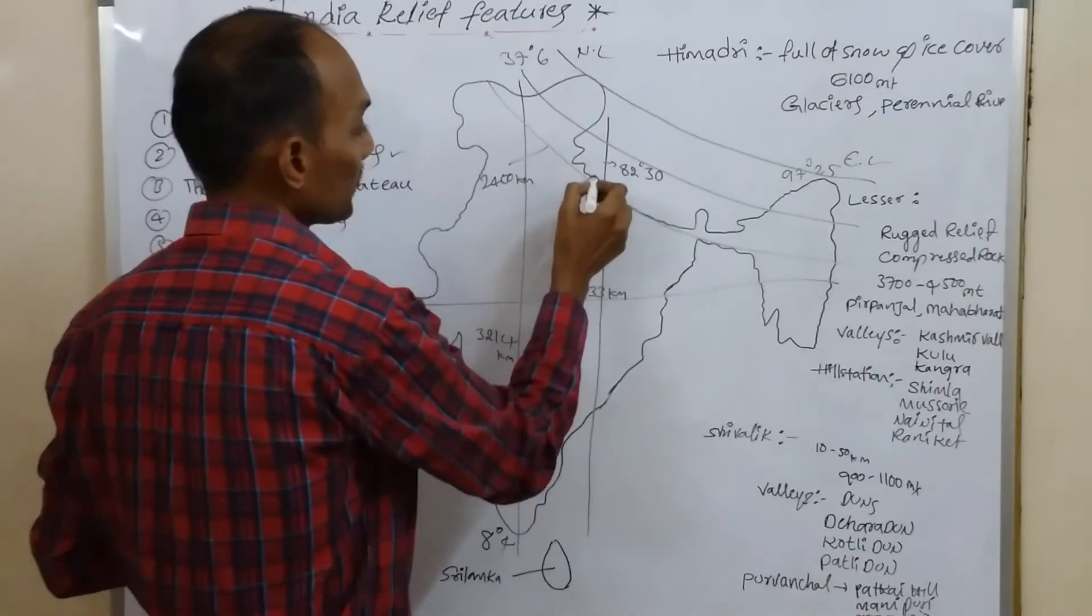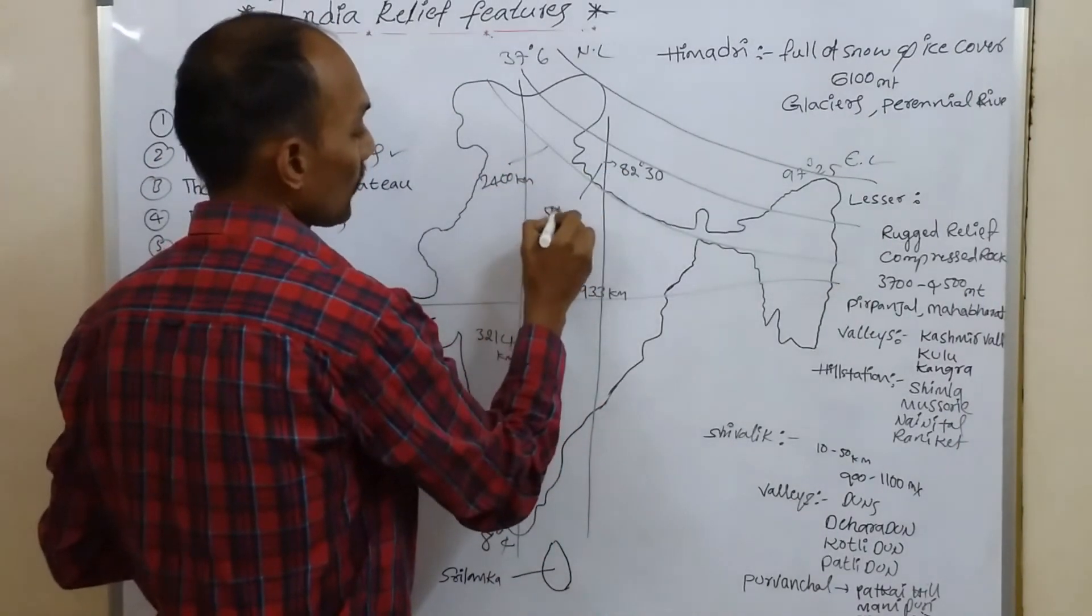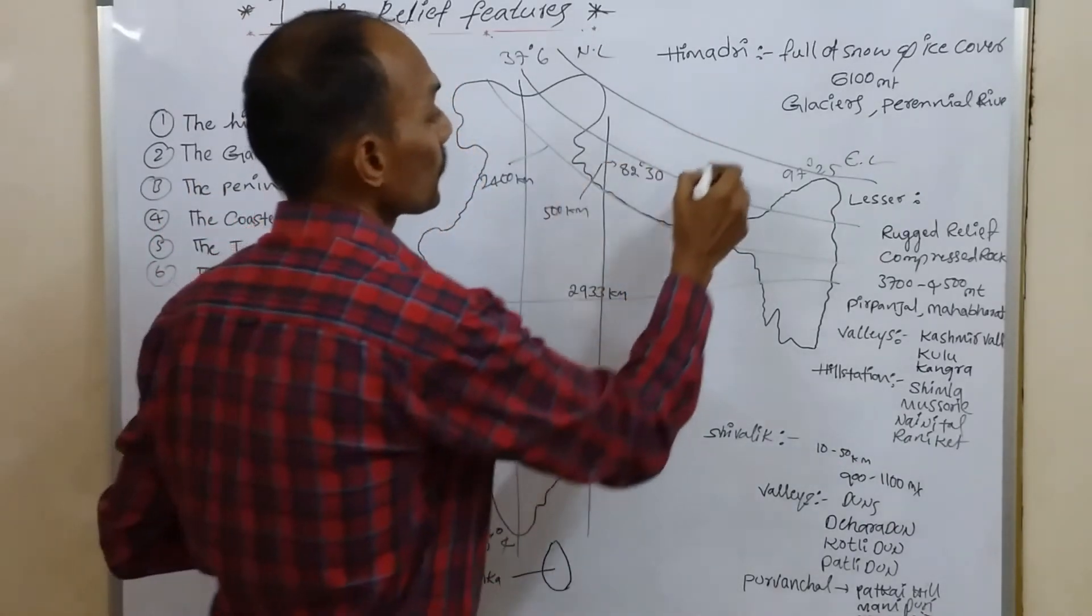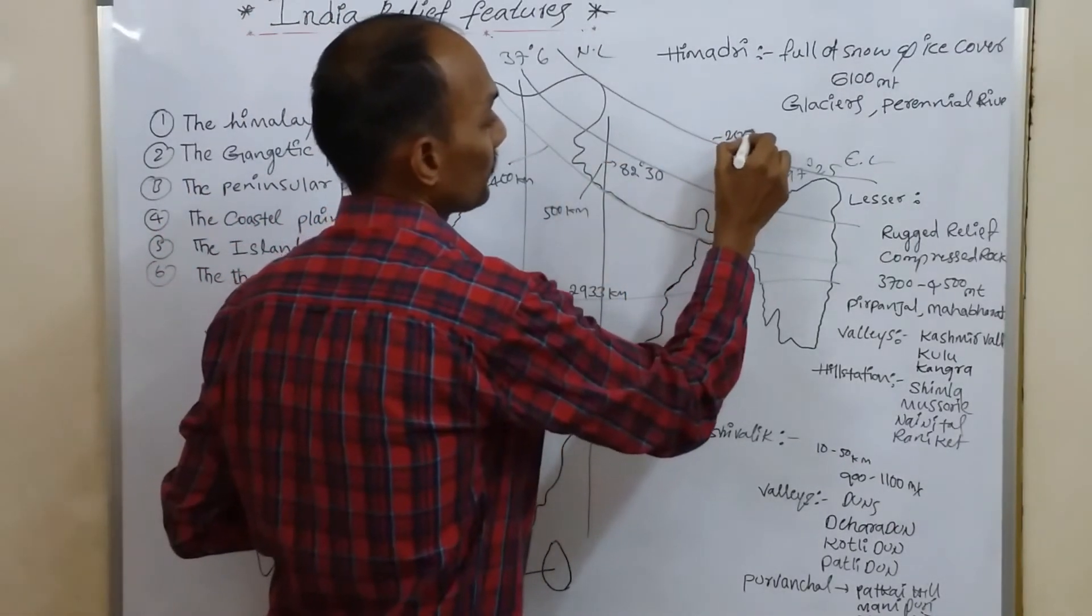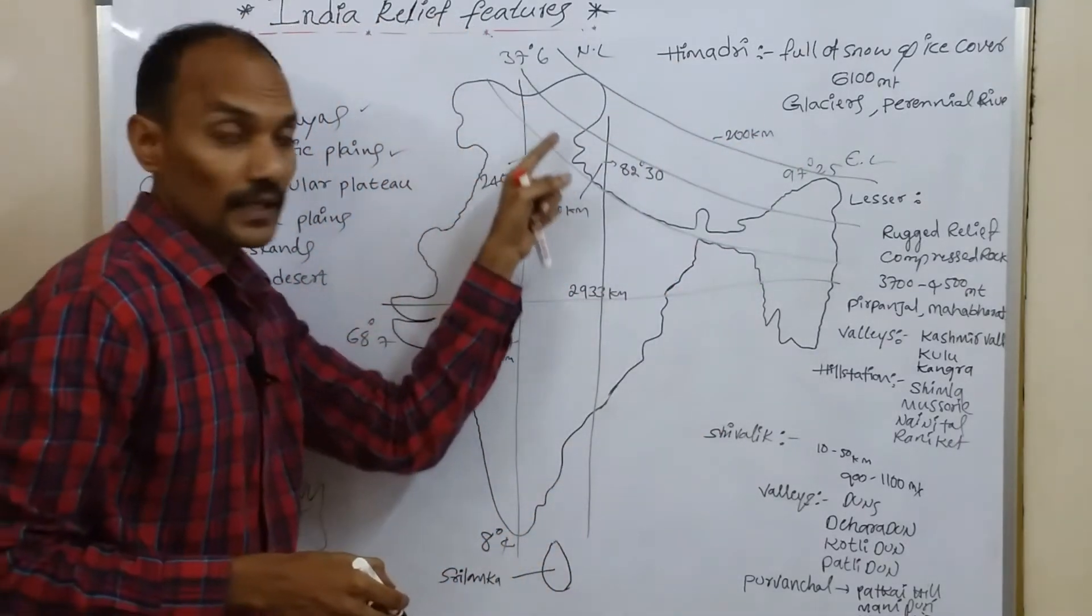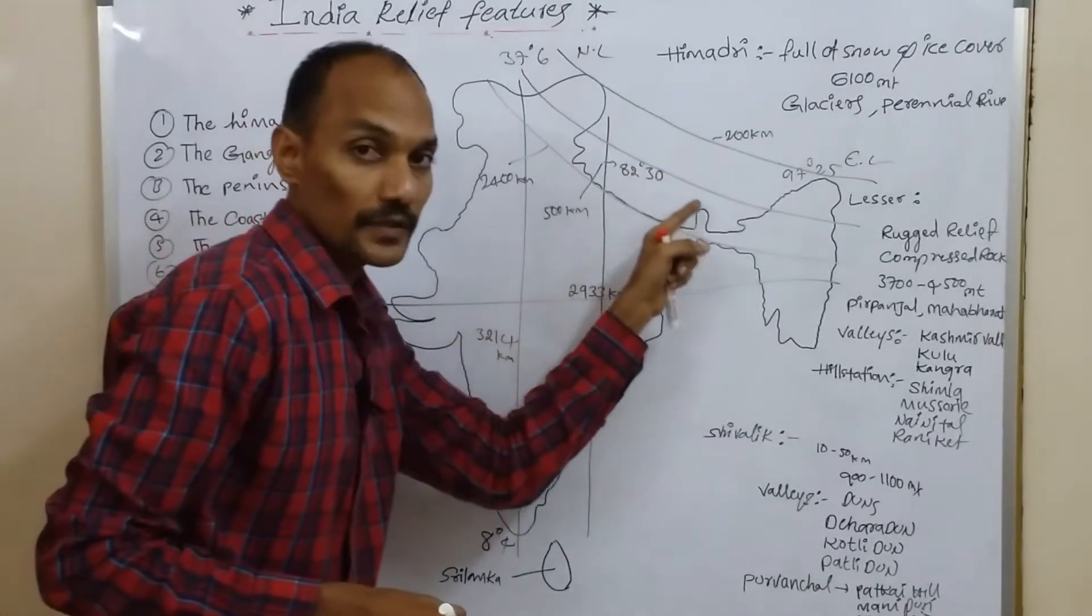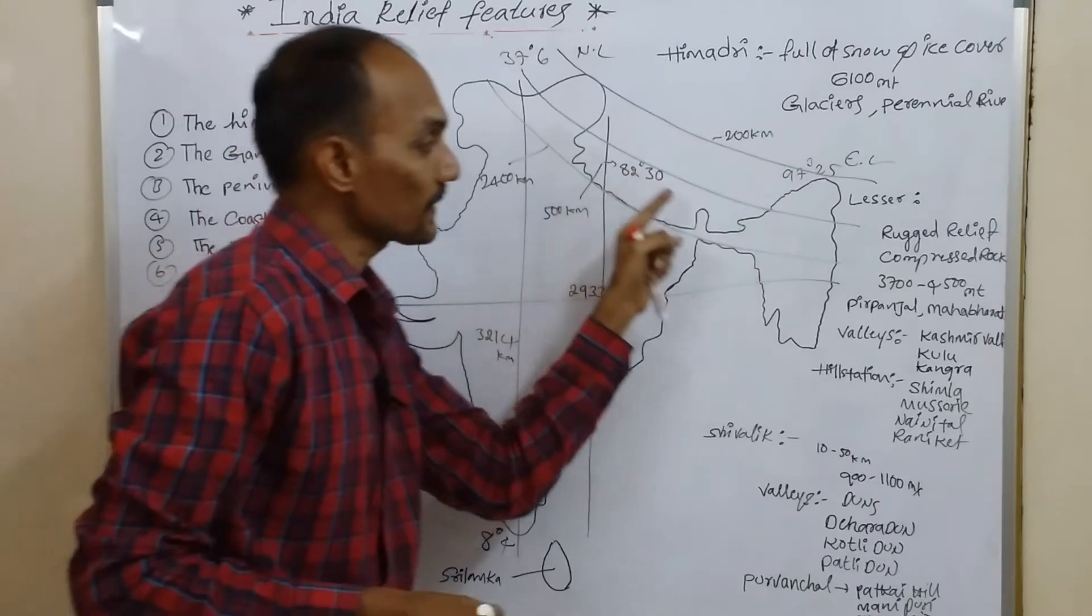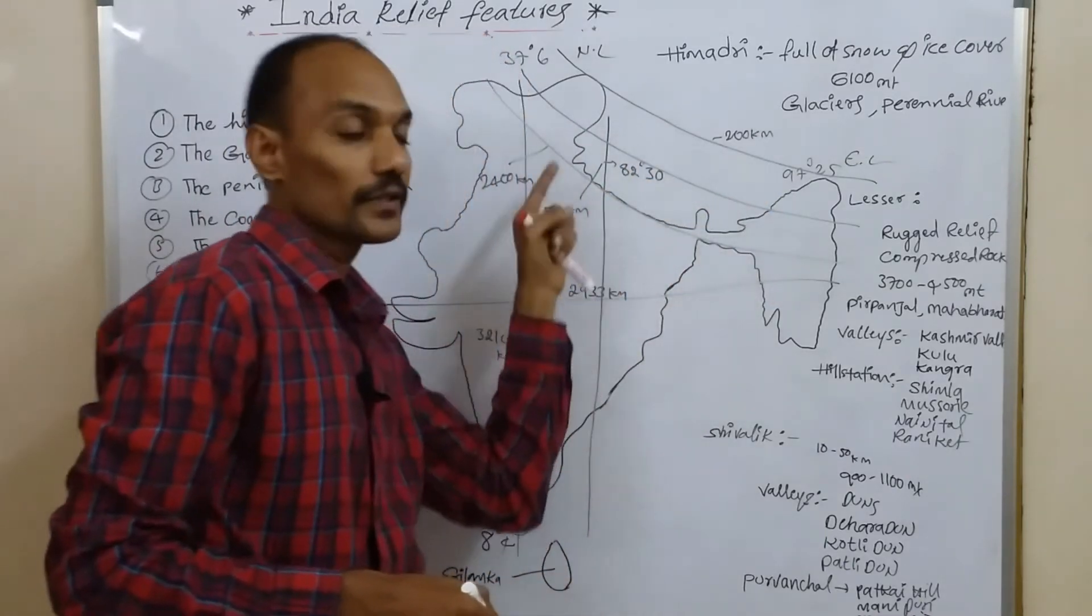West to east, about its distance 2,400 km. Their width is 500 km on the west side and central or east side 200 km. These Himalayas are divided into three parallel ranges.